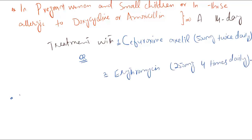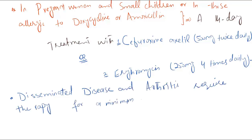Disseminated disease and arthritis require therapy for a minimum of 28 days. Neuroborreliosis is treated with parenteral beta-lactam antibiotics for three to four weeks.